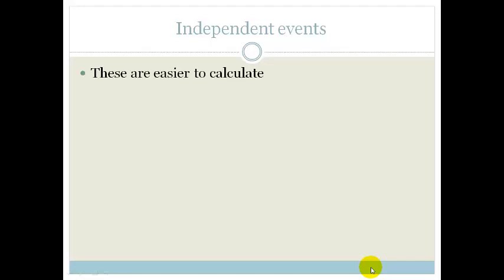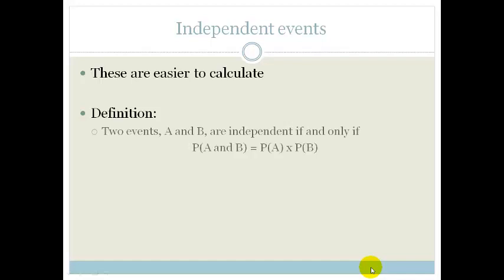Independent events are easier to calculate. To check if something is dependent or independent, we calculate to see if it's independent. If that's the case, great; if not, then it's dependent. The definition is: two events A and B are independent if and only if the probability of A and B equals the probability of A multiplied by the probability of B.